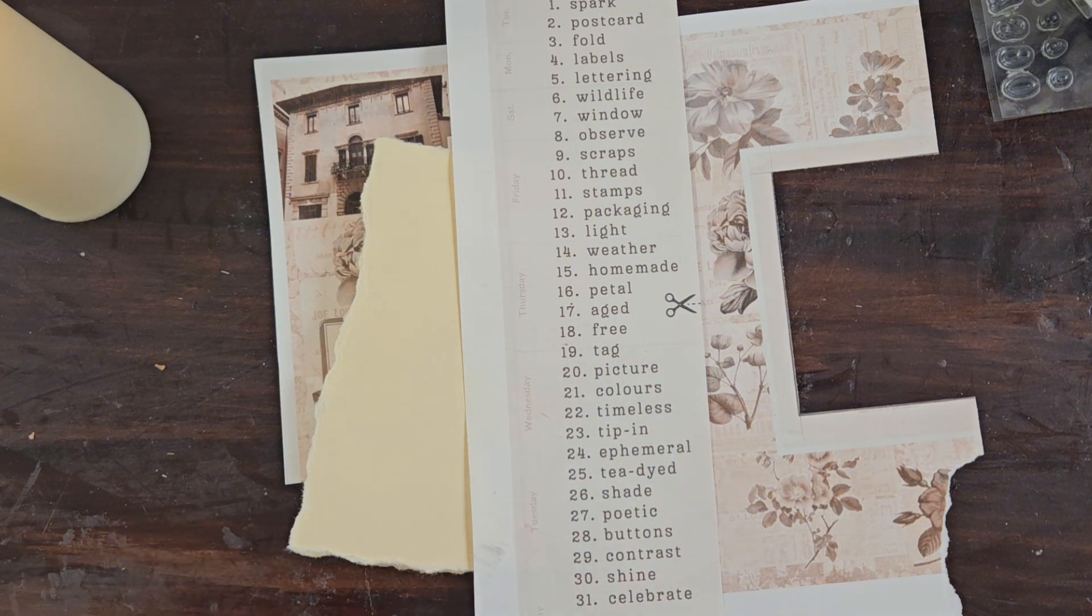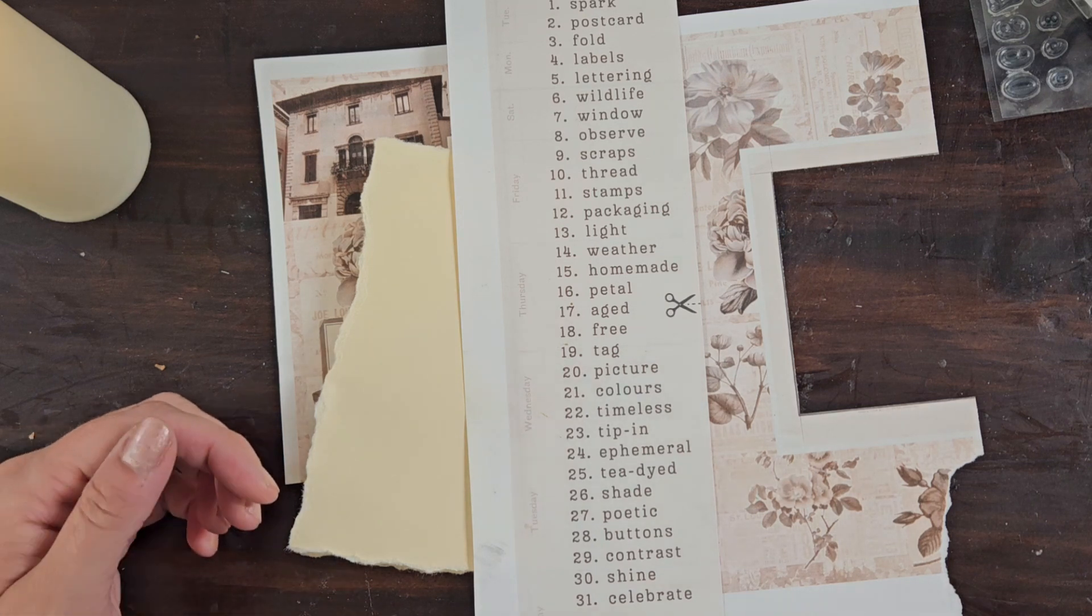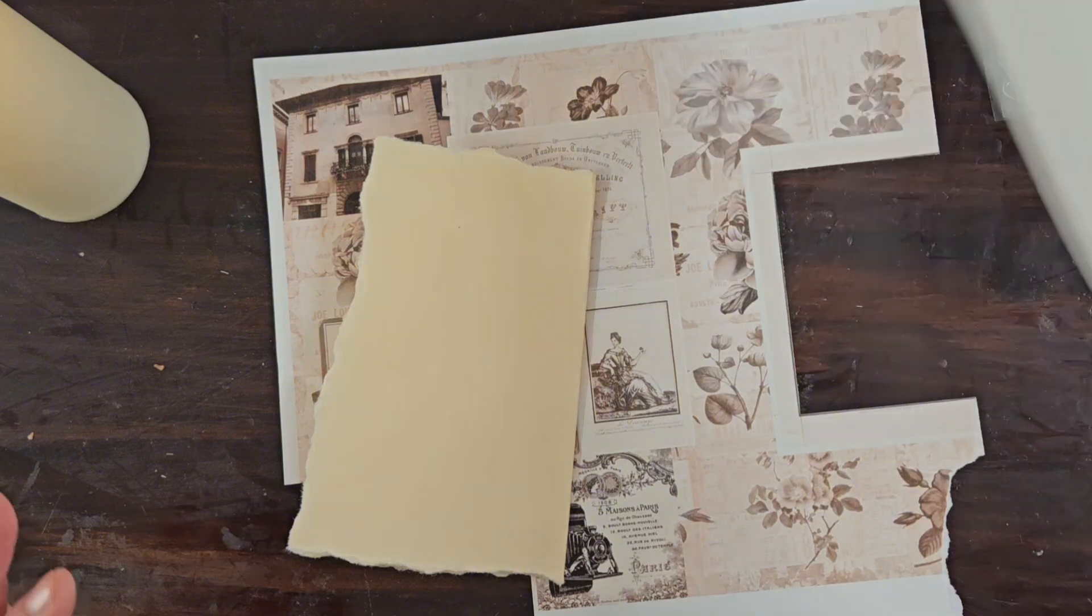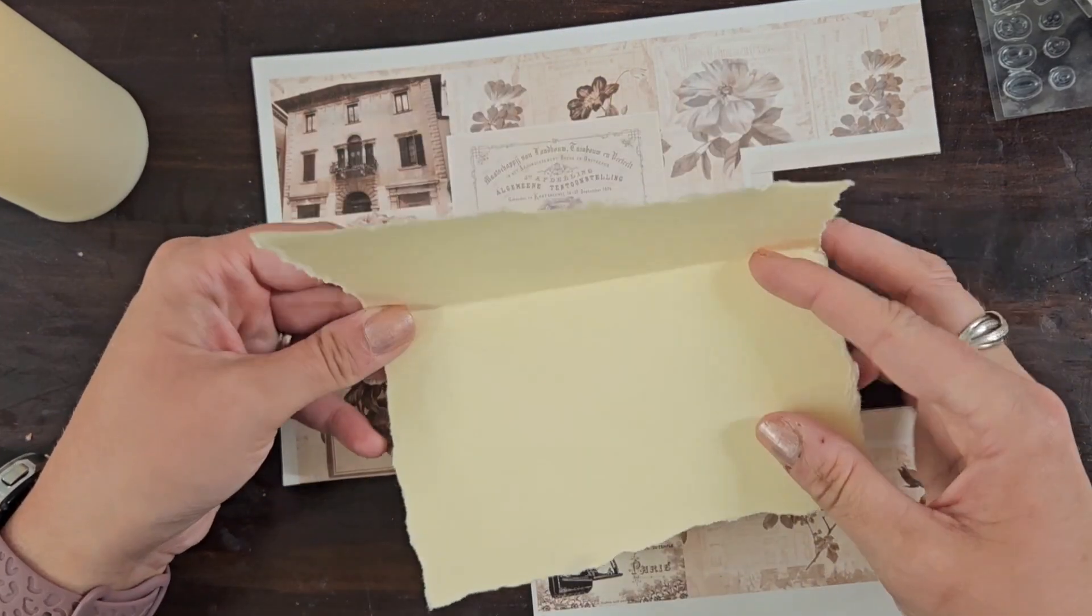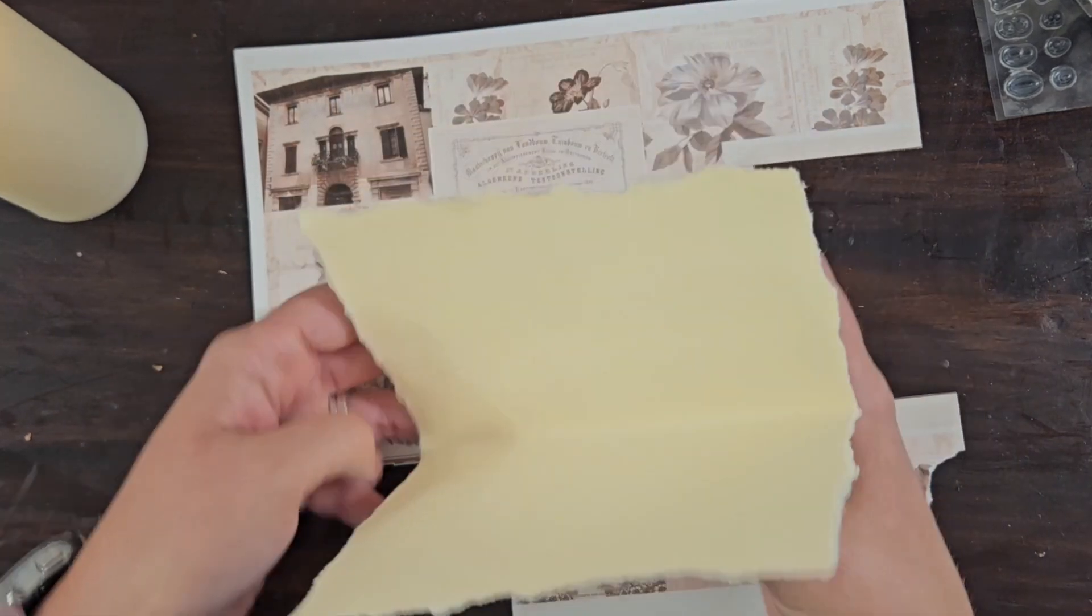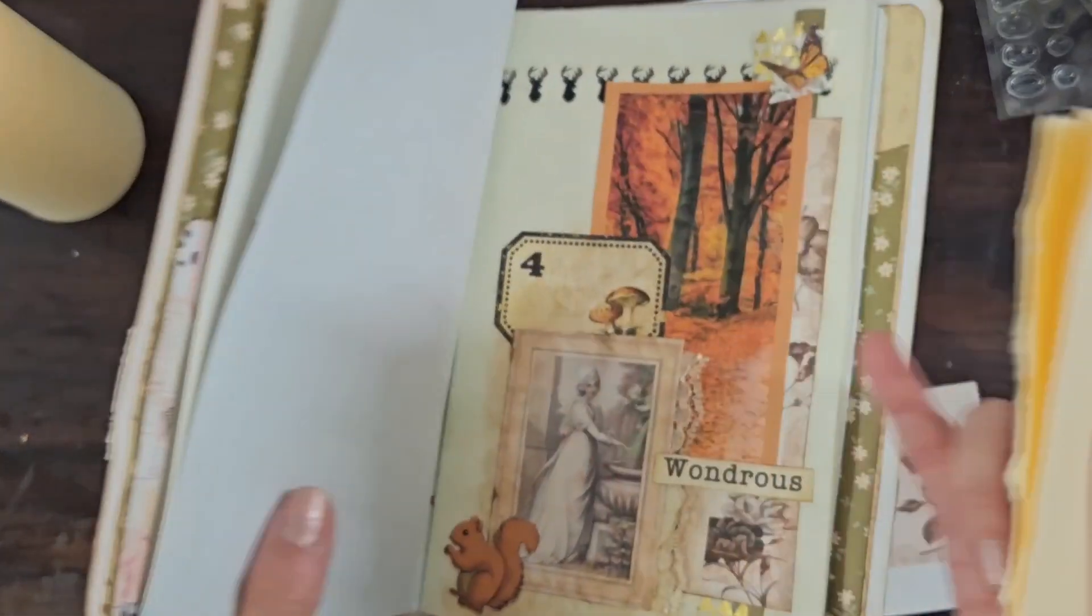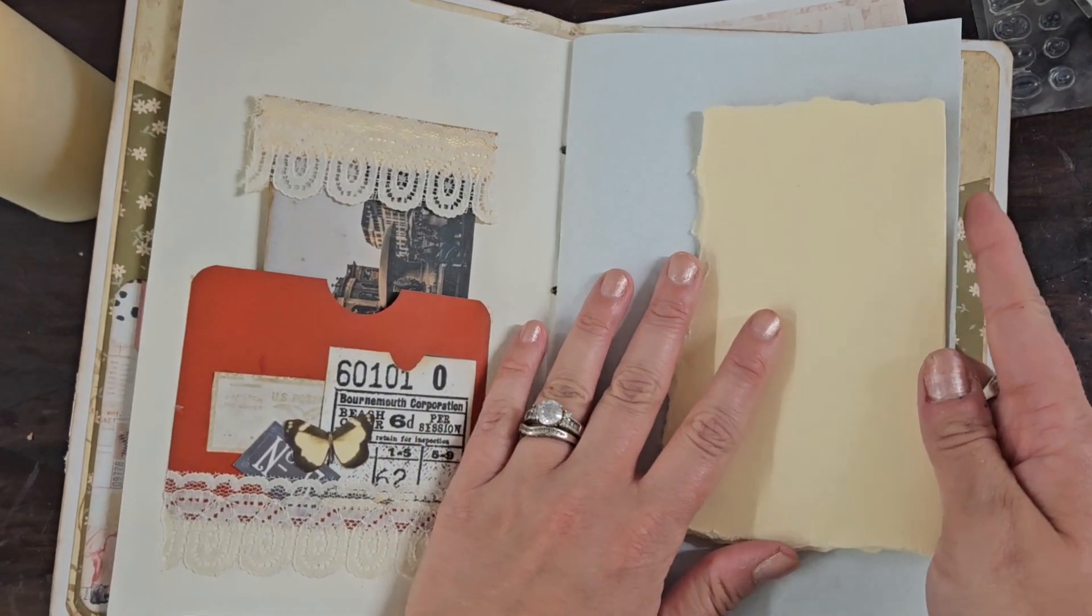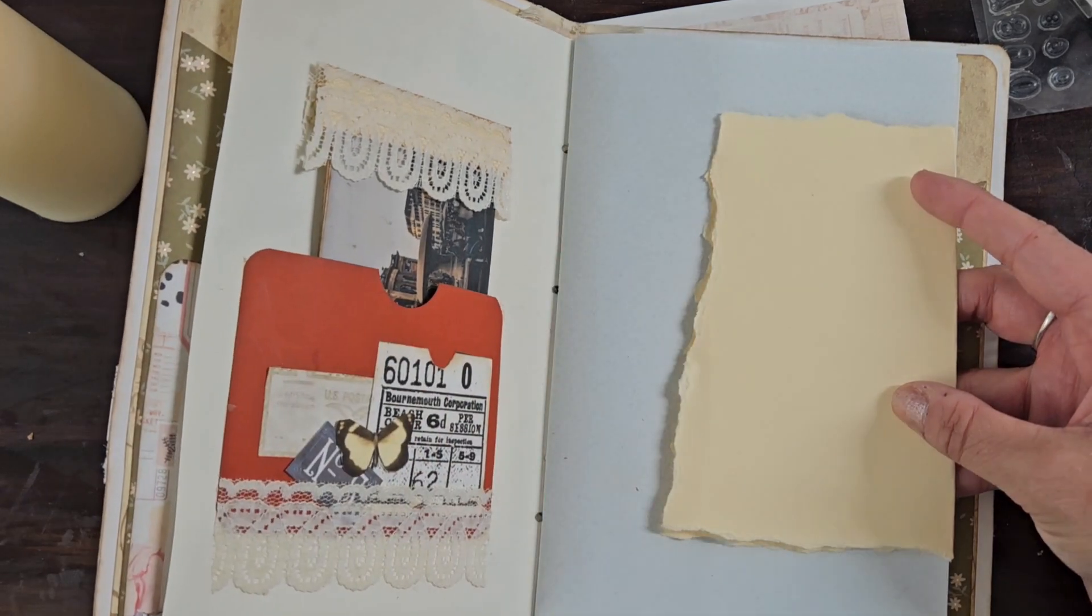So my thought was we were going to do a floating pocket to put your tags in, to put inside of our junk journal. So that's where we're going to start. I have a file folder that I just tore a shape out of, and it should be a decent size to go in our junk journal. Maybe we could just stick it on this pocket or something.